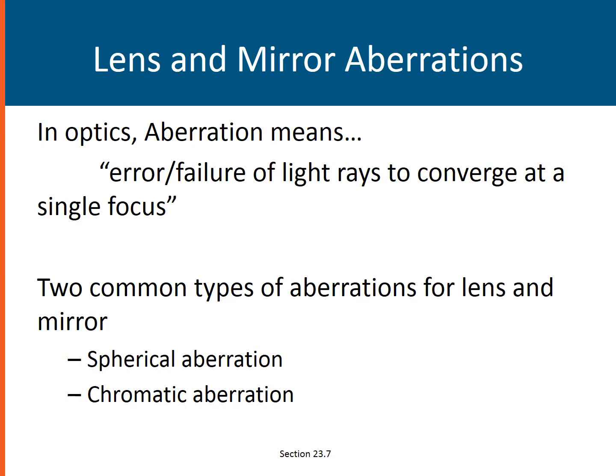In optics, aberration simply means the failure of light rays to converge at a single focus. So ideally, there should only be one focus for mirrors, but due to aberration, it is possible that you will have more than one point at which your light rays are going to converge. There are two types of aberration for lenses and mirrors: spherical aberration and chromatic aberration.